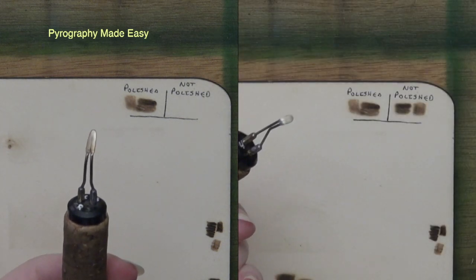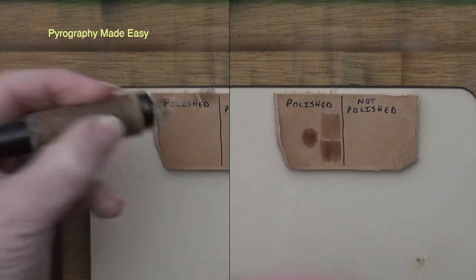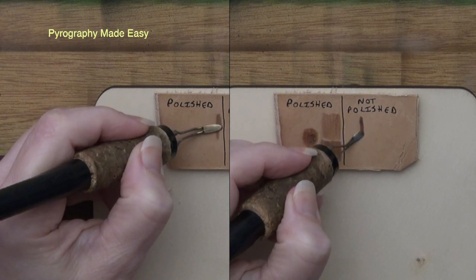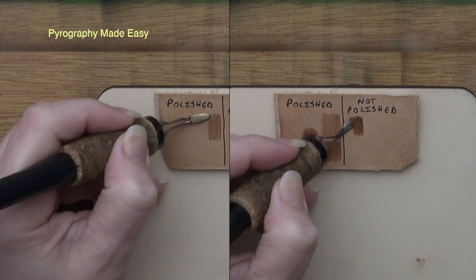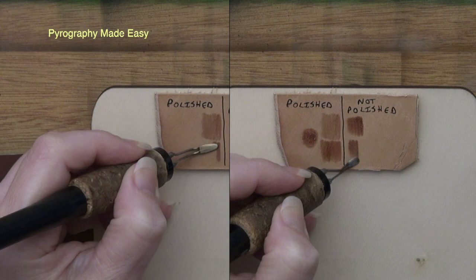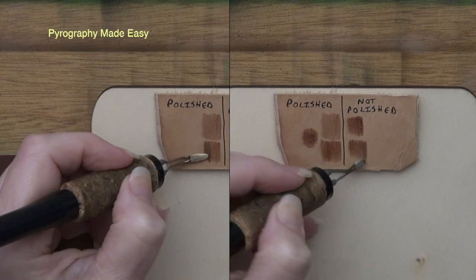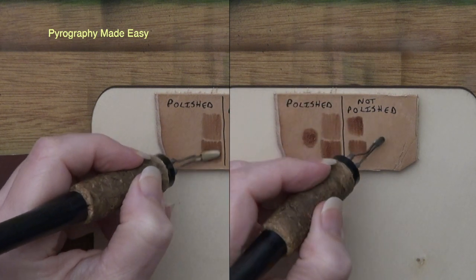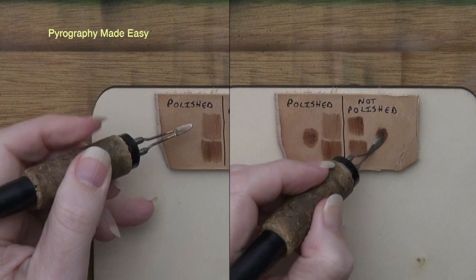Where the polished tips really shine is when you are burning on leather. You can really feel the difference between the two. The polished tip glides effortlessly, whereas the unpolished tip tends to stick a little bit. Plus the unpolished tip gets coated with carbon and turns black really fast. And when it's time to clean up the tips, the polished tip cleans much quicker, much easier.